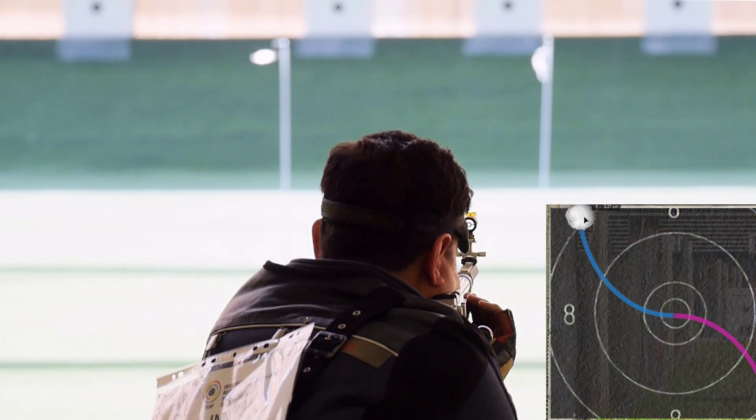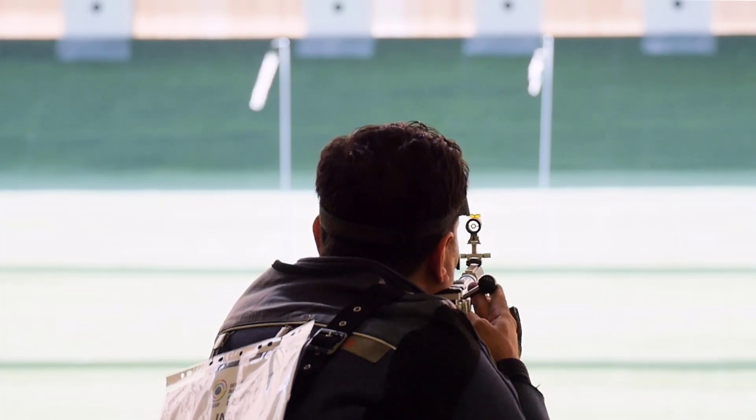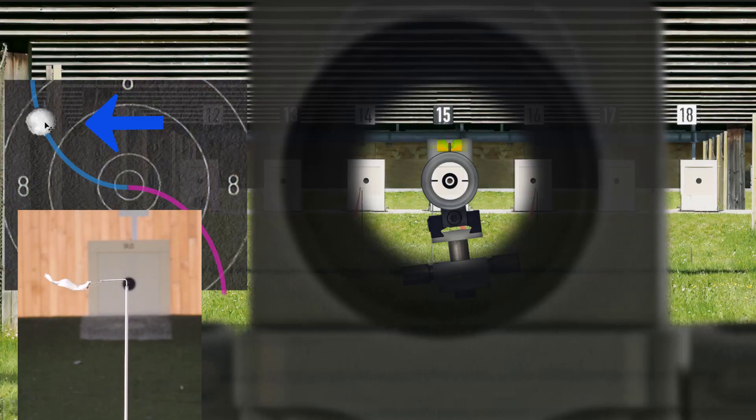With low wind, the bullet is deflected mainly to the side. Strong wind blows it up to the left or down to the right.